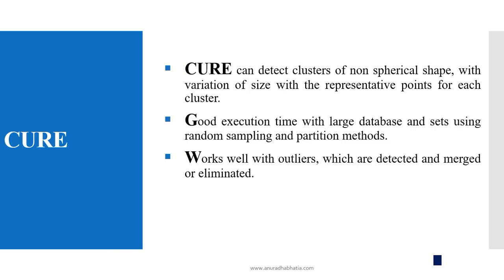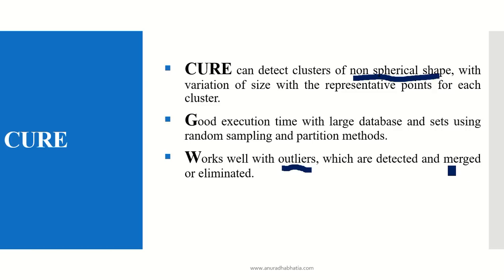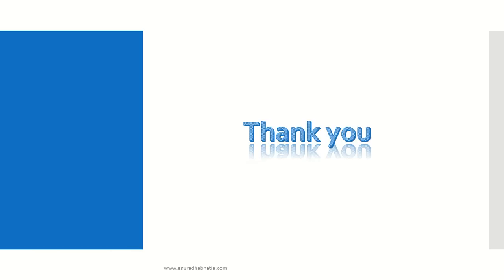To summarize: CURE can detect clusters of non-spherical shapes with variation in size using representative points for each cluster. It has good execution time with large databases using random sampling and partitioning methods. To find distance, it uses Euclidean method and works well with outliers, which are detected and merged. Outliers are merged if they help create a cluster by being near another cluster; otherwise, it is better to eliminate the outlier. This is how CURE works.